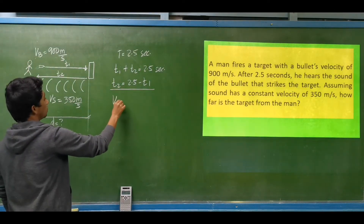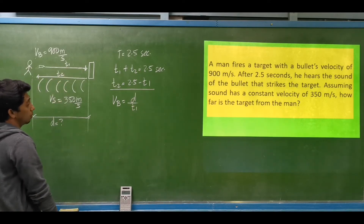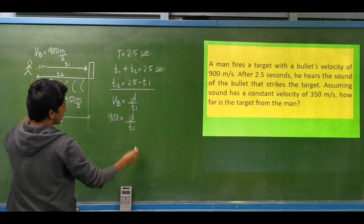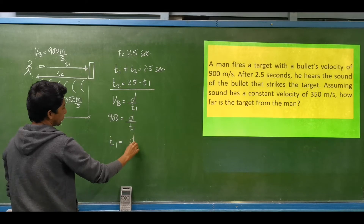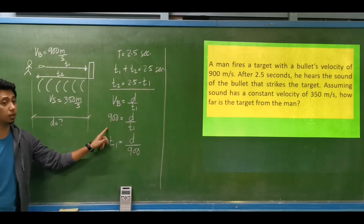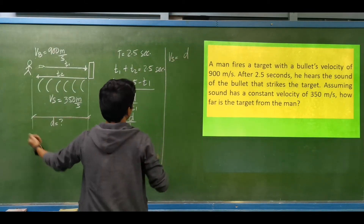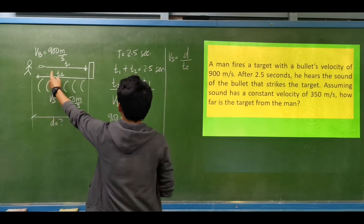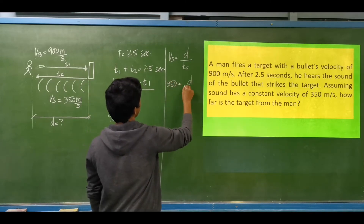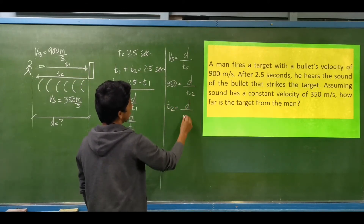The velocity of the bullet equals the distance divided by Time 1. So 900 = d / T1, giving T1 = d / 900. For the sound, the velocity of sound equals the same distance divided by Time 2. So 350 = d / T2, giving T2 = d / 350.